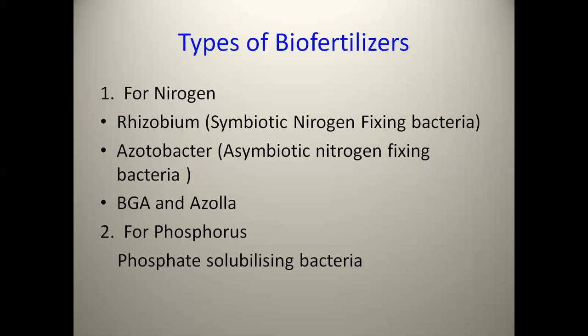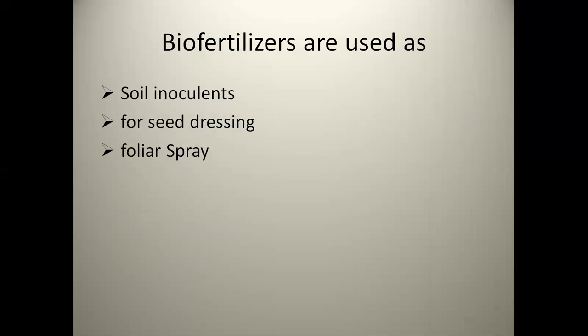For nitrogen-fixing biofertilizers, we may use Rhizobium, which is an example of symbiotic nitrogen-fixing bacteria. Another example is Azotobacter, which is a non-symbiotic nitrogen-fixing bacteria. We may also use blue-green algae and Azolla. For phosphorus, we can use phosphate-solubilizing bacteria. Biofertilizers are used as soil inoculants for seed dressing, or they may be used in the form of foliar spray.